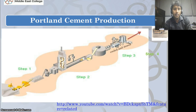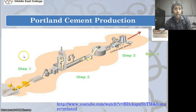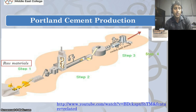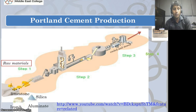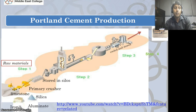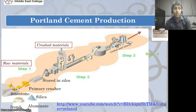This diagram shows the manufacturing process of Portland cement. The first step involves raw materials: limestone, silica, iron, and aluminate. All these materials are passed through a primary crusher. Next, all materials are transferred to silos — tall cylindrical structures used for storing materials. Then, all materials are passed through the crushing area where they are crushed.